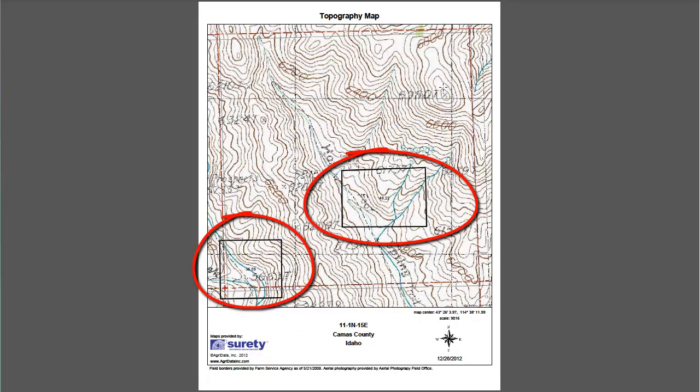Topography maps are a two-dimensional representation of a three-dimensional surface. The topography maps used by AgriData are USGS-DRG, which stands for Digital Raster Graphics, with a 1:24,000 scale.